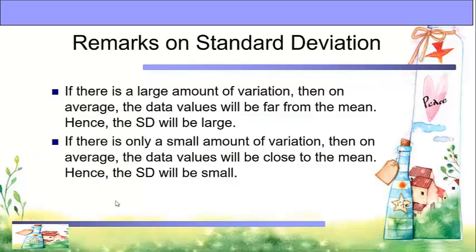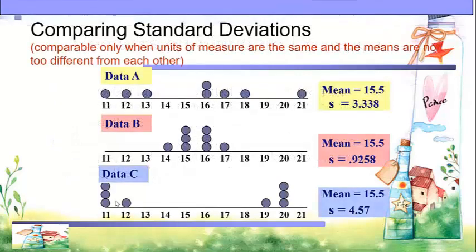Remarks on standard deviation: if there is a large amount of variation, then on average the data values will be far from the mean — hence the standard deviation will be large. If there is only a small amount of variation, then on average the data values will be close to the mean — hence the standard deviation will be small. We can only compare standard deviations when the units of measure are the same and the means are not too different from each other.